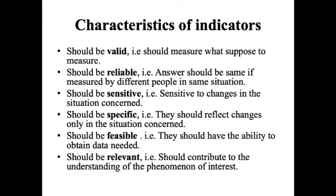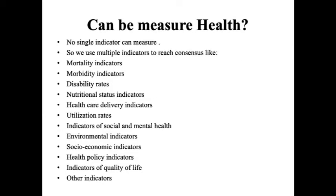Can we measure health? No single indicator can measure health, so we use multiple indicators to reach some consensus. We use different types of indicators: mortality indicators, morbidity indicators, disability rates, nutritional status indicators, health care delivery indicators, utilization rates, indicators of social and mental health, environmental indicators, socioeconomic indicators, health policy indicators, indicators of quality of life, and many others. Multiple indicators are used for different purposes.